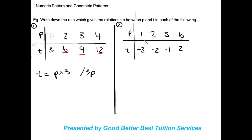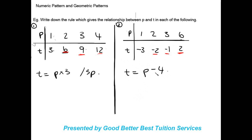We could try subtracting 4. If we do 1 minus 4, we get -3. Moving to the next term: 2 minus 4 gives -2 — yes. Three minus 4 gives -1 — yes. And 6 minus 4 gives 2, which is our t value. So the rule is t = p - 4. That is the rule showing the relationship between p and t for this numeric example.